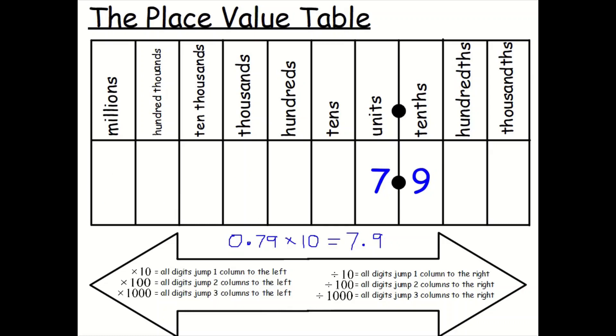What happens if I multiply 7.9 by 1,000? What do we do if we multiply by 1,000? All digits jump three columns to the left. Three columns. 1, 2, 3. What do we have to do where those spaces have been left? We have to have place value holders. So this becomes 7,900. That is how you multiply by 10, 100, and 1,000.